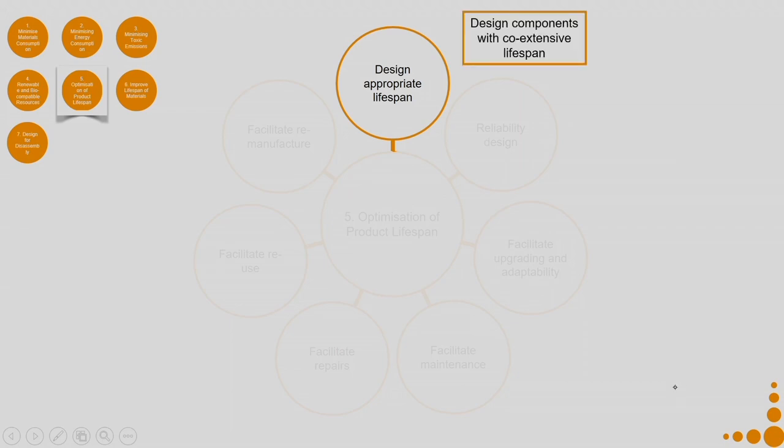Some examples for designing appropriate lifespan: design components with co-extensive lifespan — if a product has a 20-year lifespan, try to design components that also have a long lifespan. But if the product has only a 5-year lifespan and a component has a 20-year lifespan, there should be some mechanism to collect that component after the product is no longer useful, otherwise you waste the material and energy consumed in creating it.